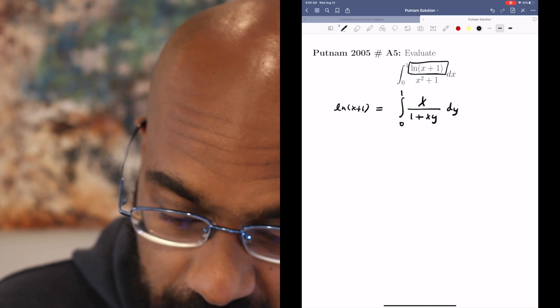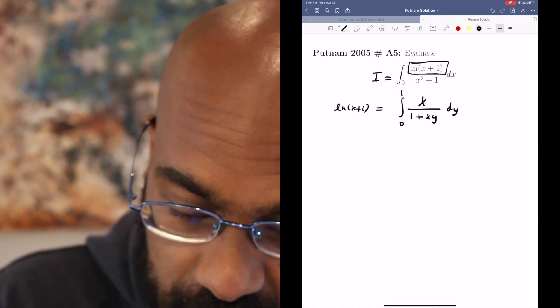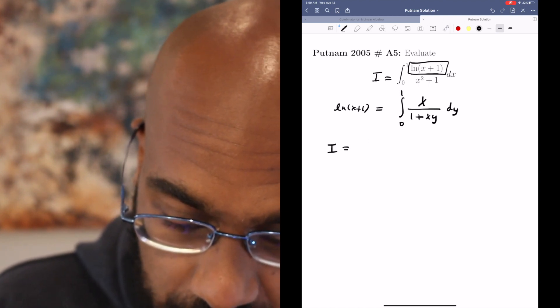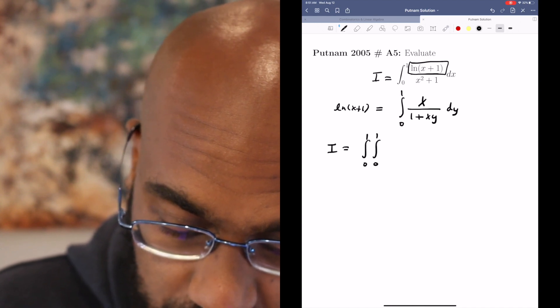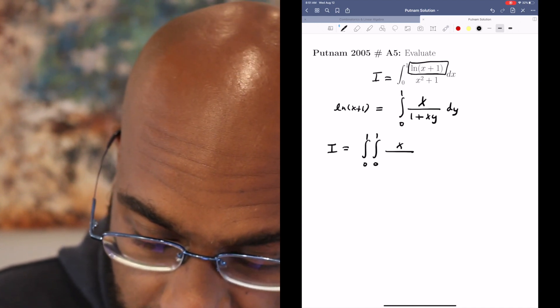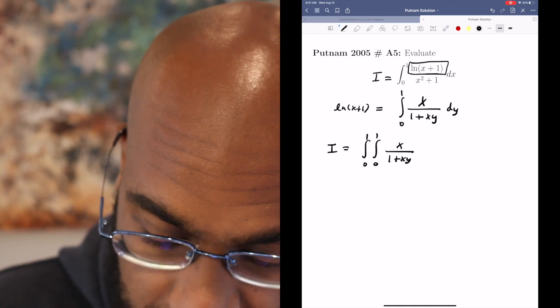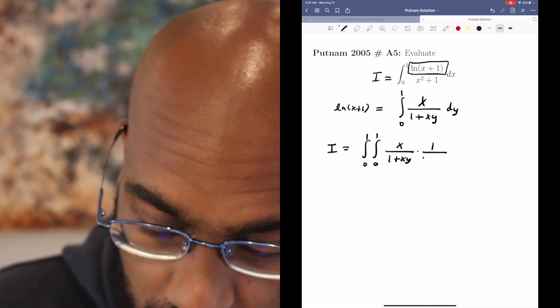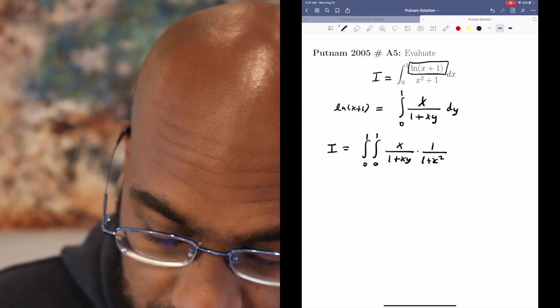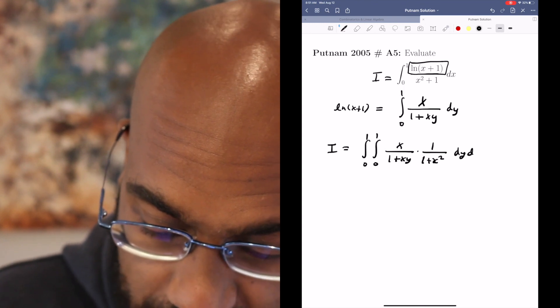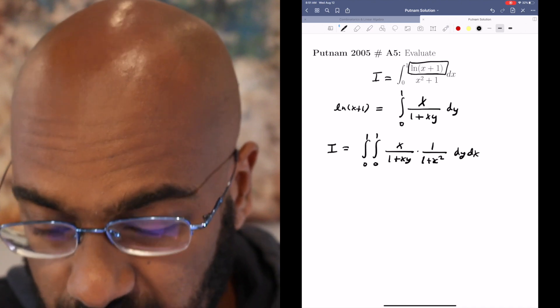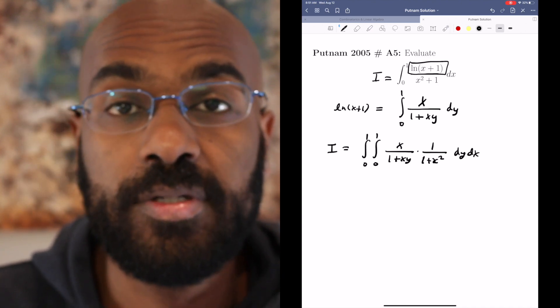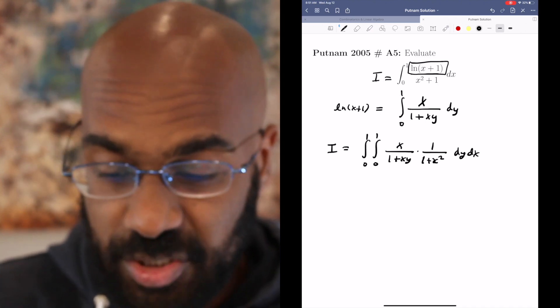So there is a way to express the numerator of the original integral as an integral of a different variable. If we put that together then, our integral that we're interested in, which I'll call i, is the integral from 0 to 1 integral from 0 to 1 of x over 1 plus xy times 1 over 1 plus x squared dy dx. Now we've expressed our original integral as a double integral, and the goal is to compute this.